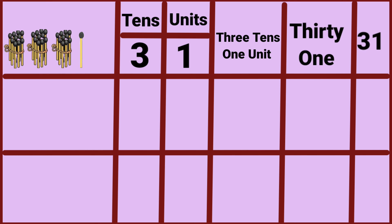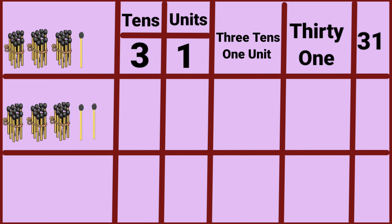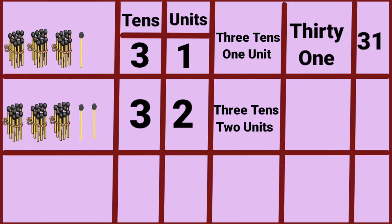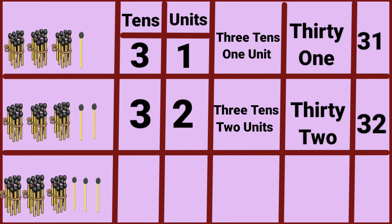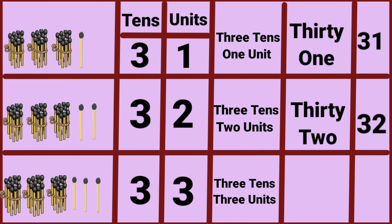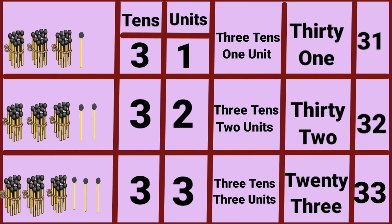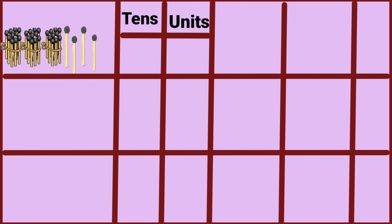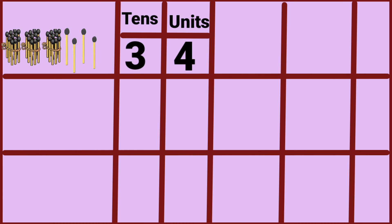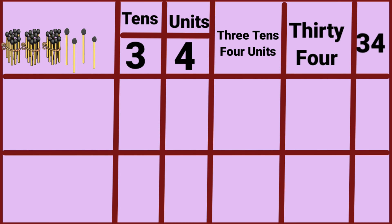Thirty-one. Three tens, two units — thirty-two. Three tens, three units — thirty-three. Three tens, four units — thirty-four.